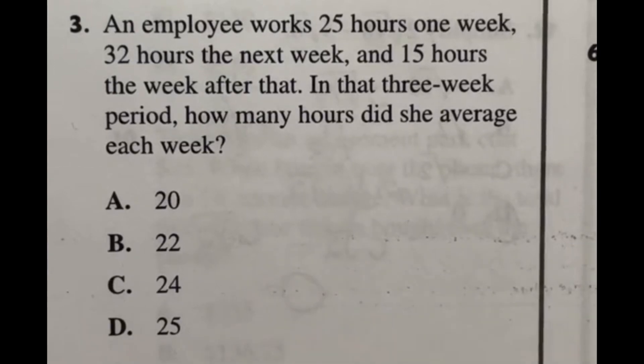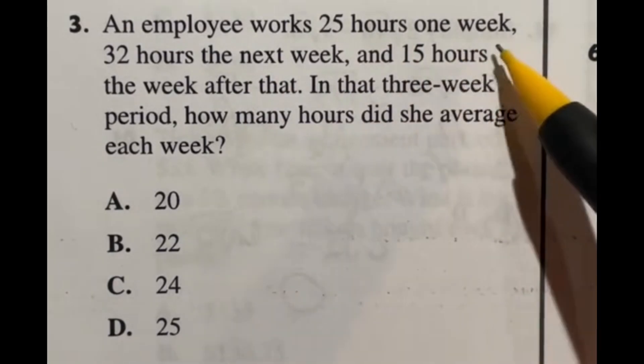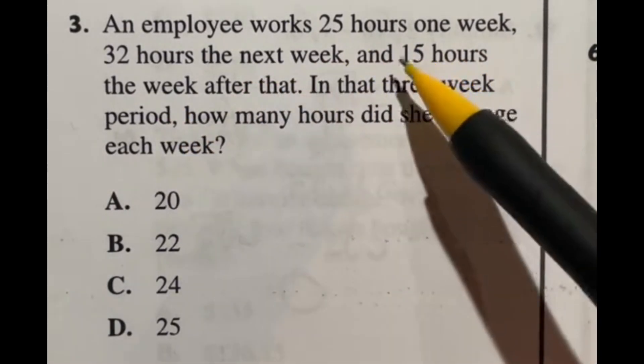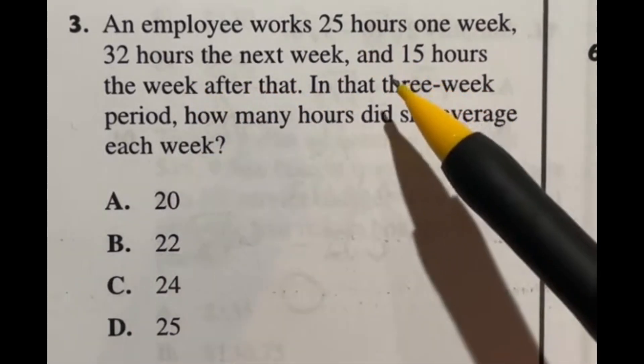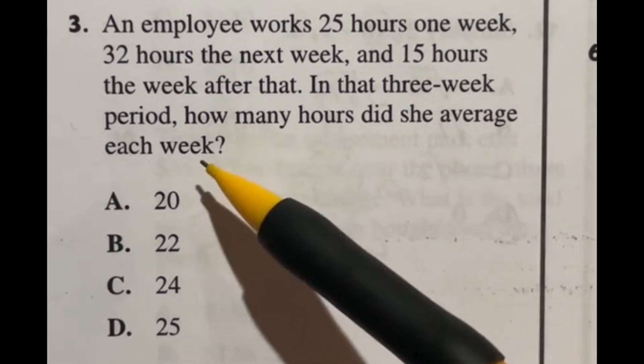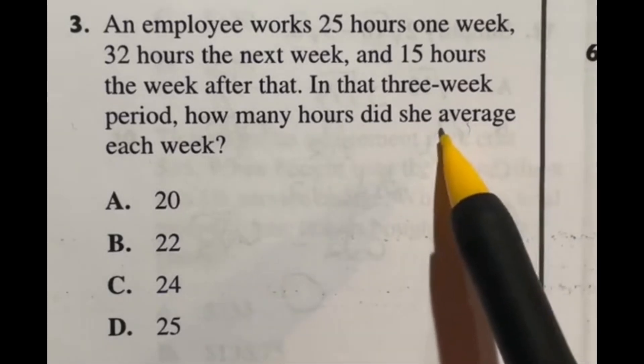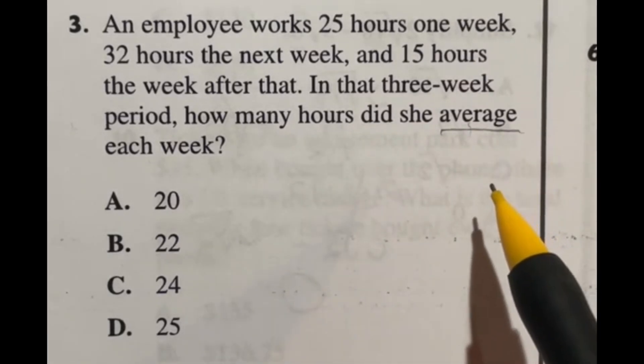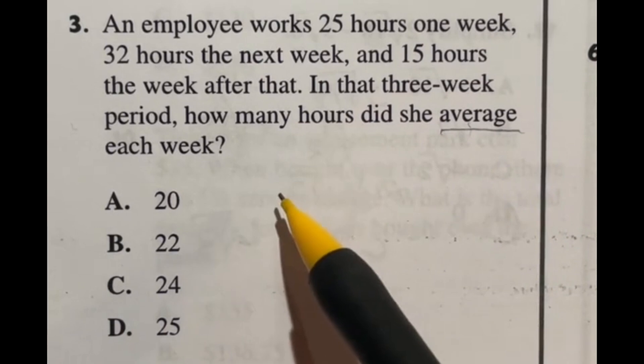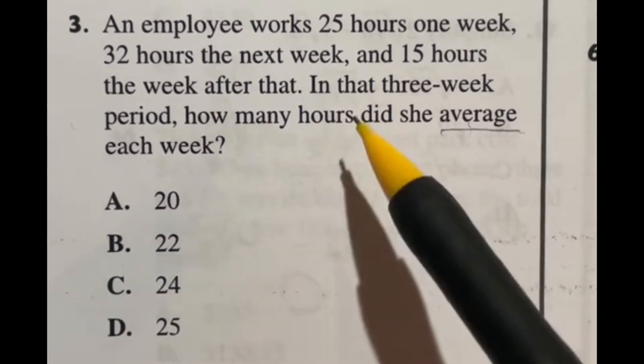Number three on the arithmetic reasoning portion of the ASVAB says an employee works 25 hours one week, 32 hours the next week, and 15 hours the week after that. In that three week period, how many hours did she average each week? So if we're looking here, we just have to find the average, which if you didn't know, average is another word for the mean. So we're looking for adding up the three numbers and then dividing that by how many numbers we have, which is three.